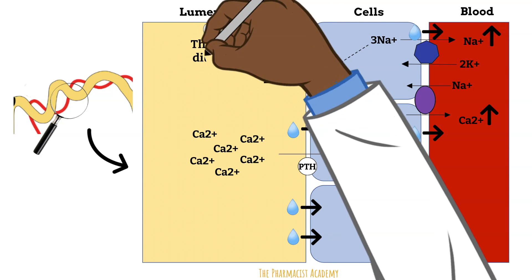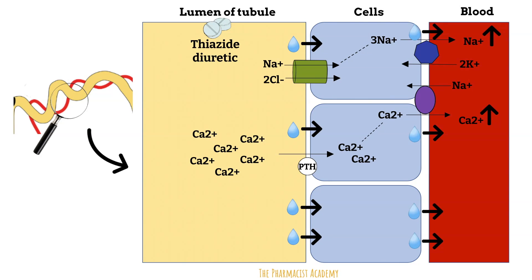Now, when a patient takes a thiazide diuretic, the following happens. First, they inhibit the sodium chloride co-transporter, and this leads to less sodium and chloride going into the cell. Second, because there is less sodium coming into the cell via the sodium chloride co-transporter, there will be less sodium to pump into the blood by the sodium-potassium ATPase, and less potassium entering the cell. Please remember that there is less sodium moving into the blood, but when we compare the concentration of blood sodium to intracellular sodium, it's higher in the blood, creating a concentration gradient — so blood sodium moves into the cells to establish equilibrium.